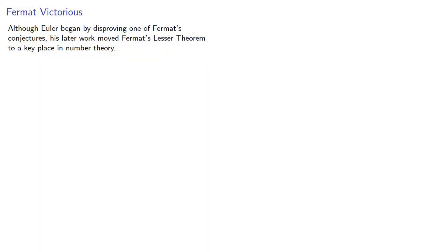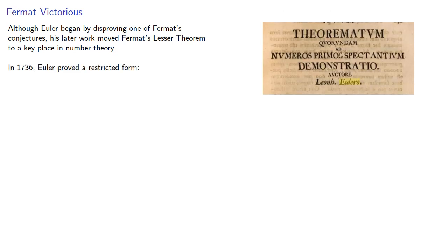Although Euler began by disproving one of Fermat's conjectures, his later work moved Fermat's lesser theorem to a key place in number theory. In 1736, Euler proved a restricted form.